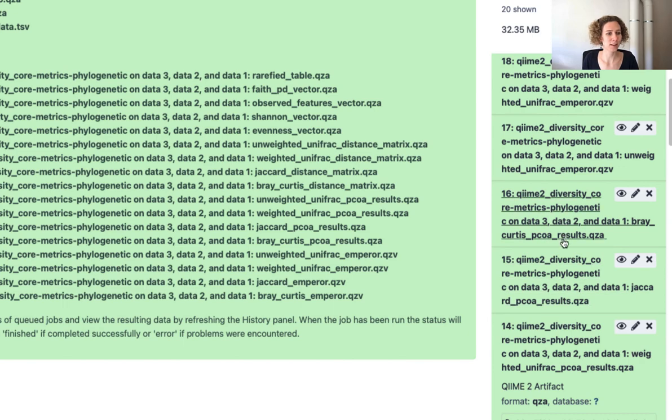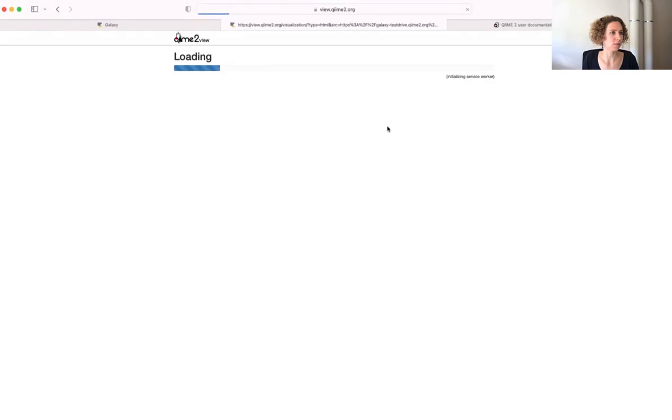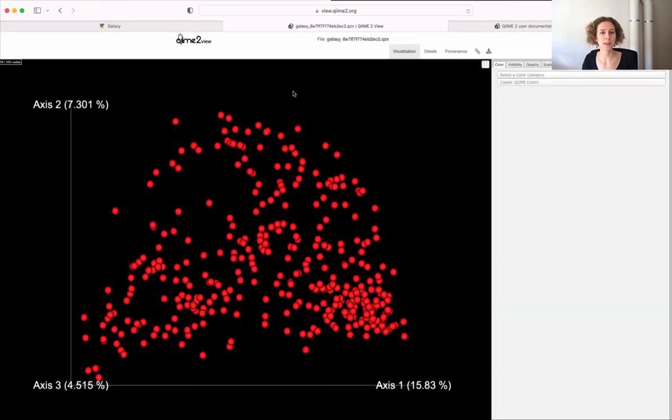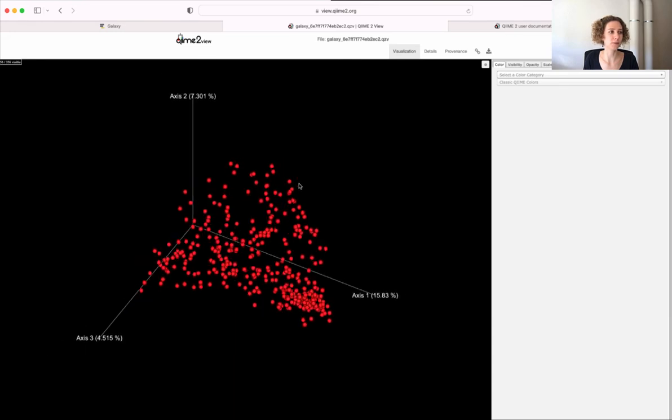And let's have a very quick look, last but not least, at an emperor plot. Because these are actually visualizations. And what's great about this pipeline as well is that it generates so many different artifacts automatically for you.